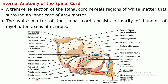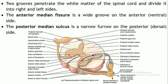Coming to the internal anatomy of the spinal cord. A transverse section of the spinal cord reveals differential areas of grey matter and white matter. White matter generally comprises myelinated axons, whereas grey matter usually comprises unmyelinated neurons, cell bodies, and neuroglia. Some portions appear whitish and some appear greyish, because of the differential arrangement of myelinated and unmyelinated axons and cell bodies.